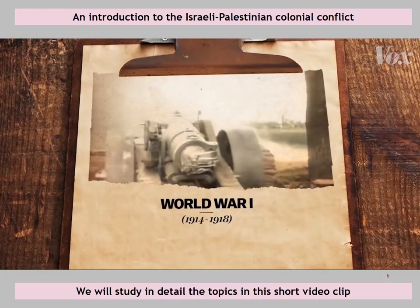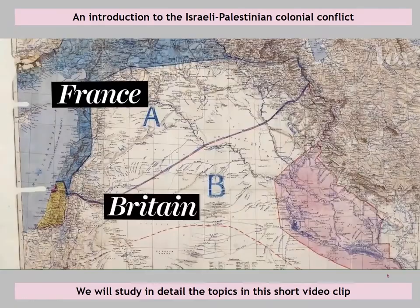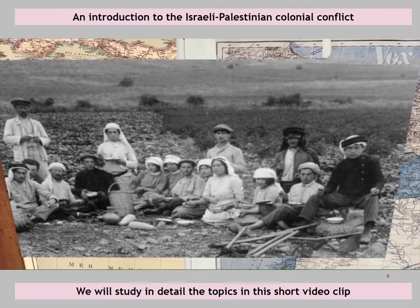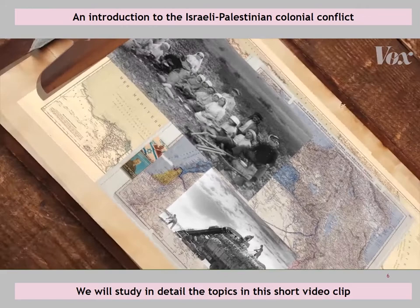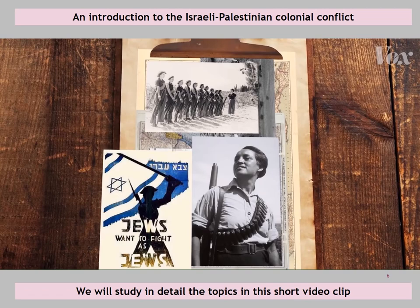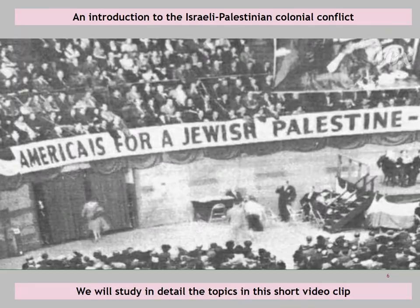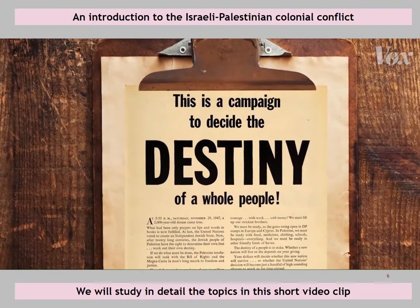After World War I, the Ottoman Empire collapsed, and the British and French empires carved up the Middle East, the British taking control of a region it called the British Mandate for Palestine. At first, the British allowed Jewish immigration. But as more Jews arrived and settled in farming communities, tension between Jews and Arabs grew. Both sides committed acts of violence, and by the 1930s the British began limiting Jewish immigration. In response, Jewish militias formed to fight both the local Arabs and to resist British rule. Then came the Holocaust, leading many more Jews to flee Europe for British Palestine, and galvanizing much of the world in support of a Jewish state.